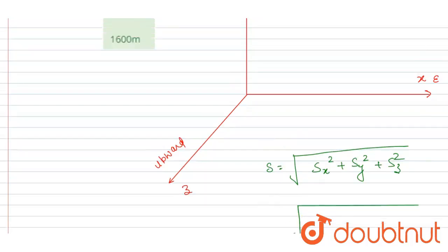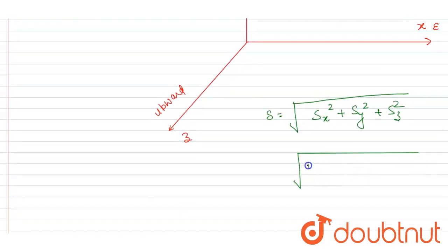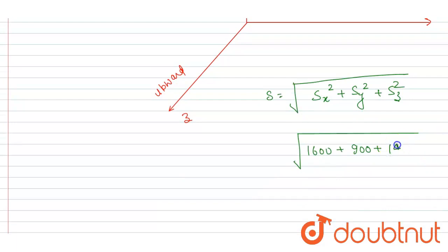So if you see, 400 squared is 160000 plus 300 squared is 90000 plus 1200 squared is 1440000.